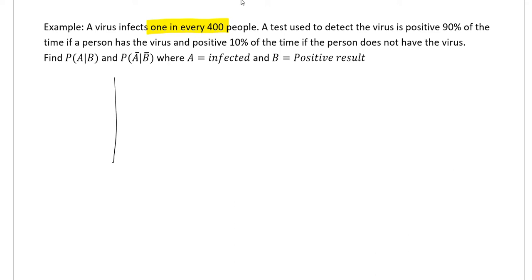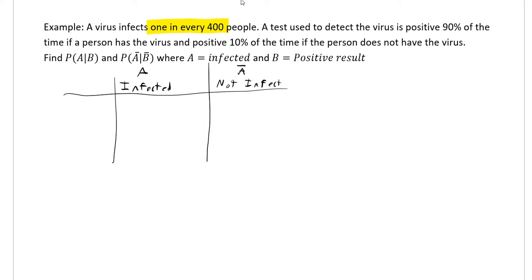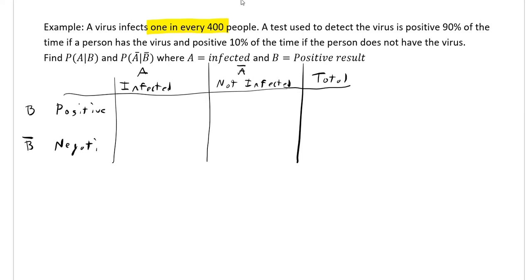On the top I'll represent A (infected) and A complement (not infected), plus a total. On the side I'll have B (positive) and B complement (negative), plus a total. The best way to organize all this information is with this table. First, the virus infects one in every 400 people — we'll work with that piece of information first before moving on. That gives us the column totals. We need to consider an overall total: I'll use 40,000.